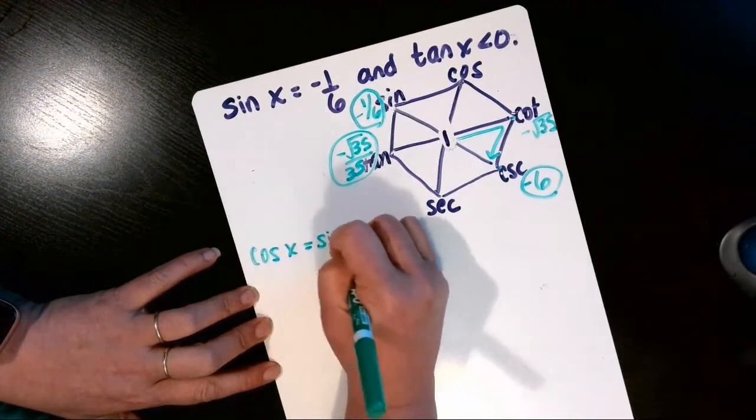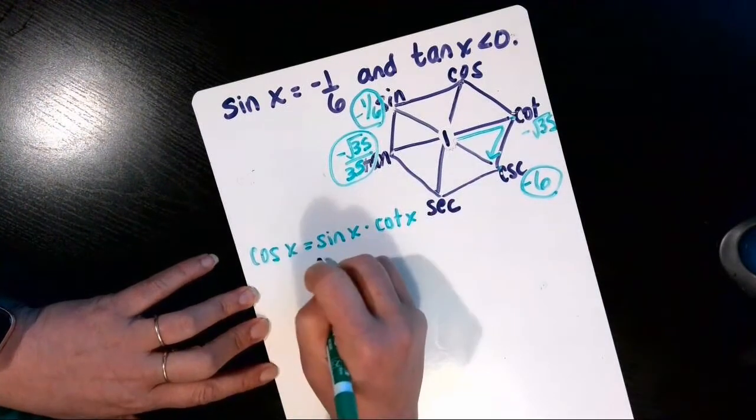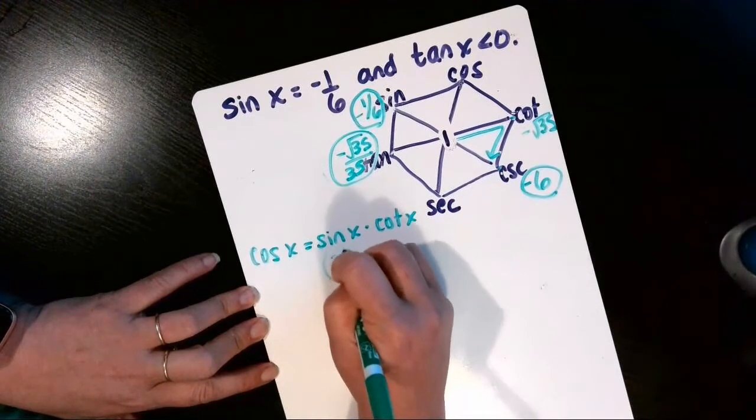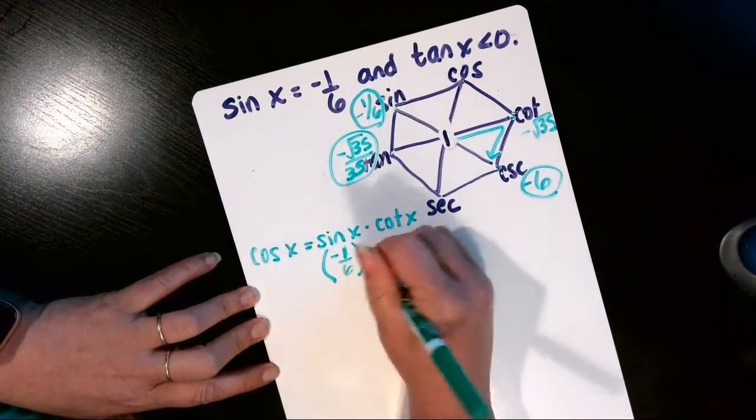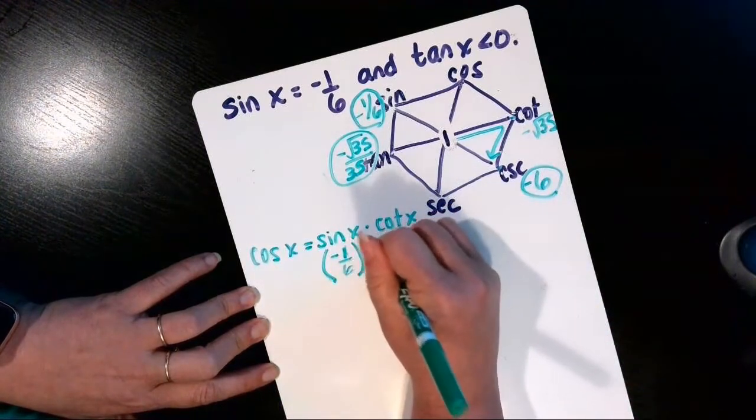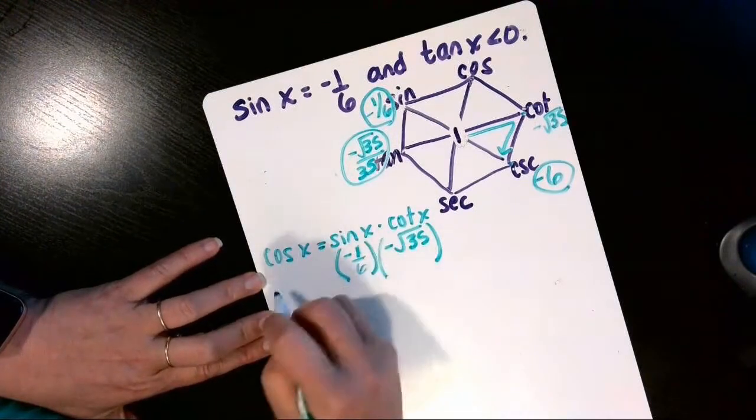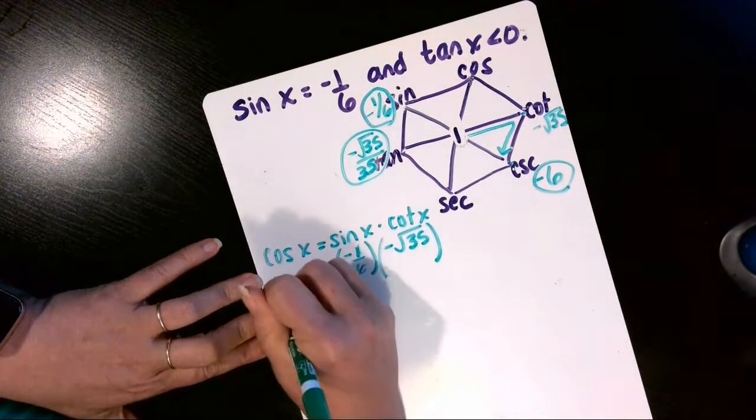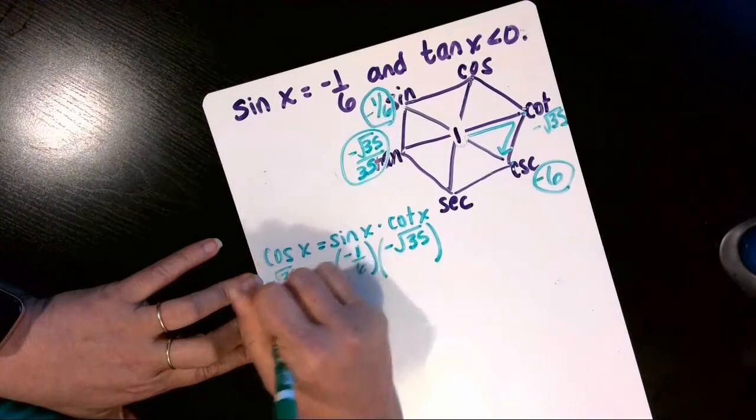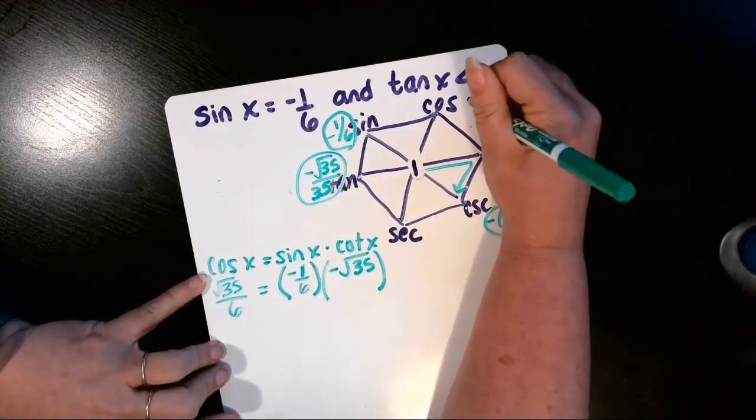We can substitute in negative 1/6 for the sine that was given, and then cotangent we found was negative root 35. When we multiply those together, a negative times a negative is a positive, so we get square root of 35 divided by 6 for the cosine.